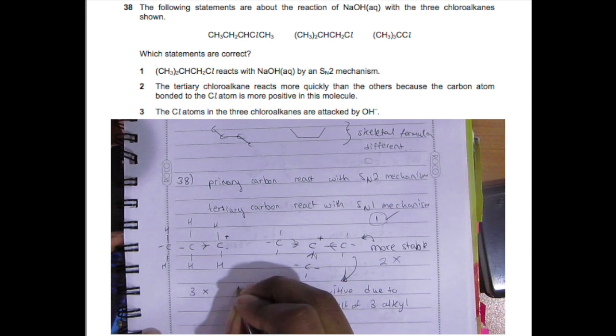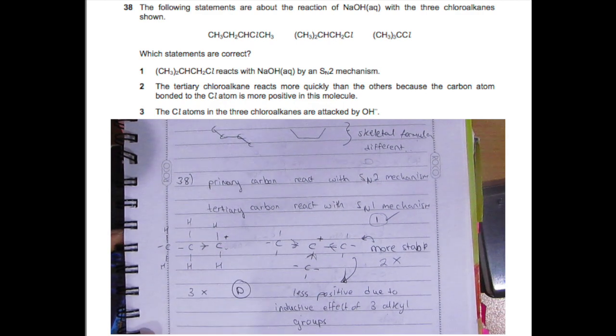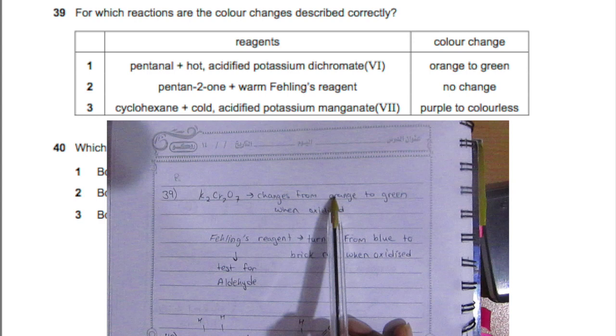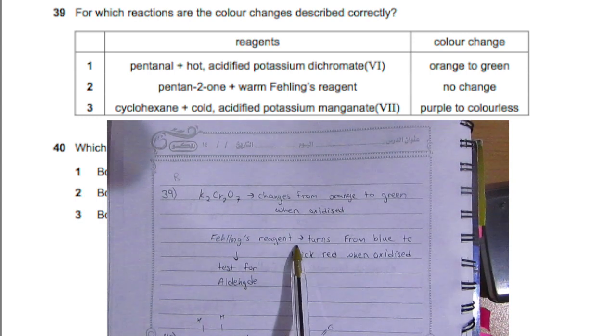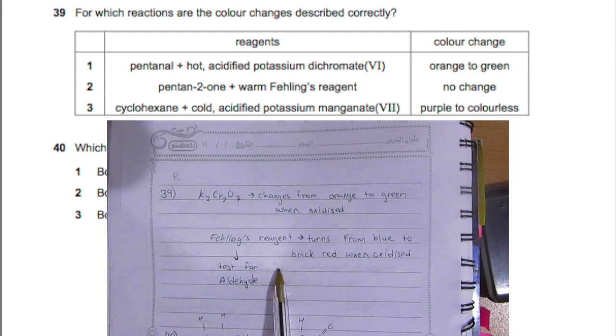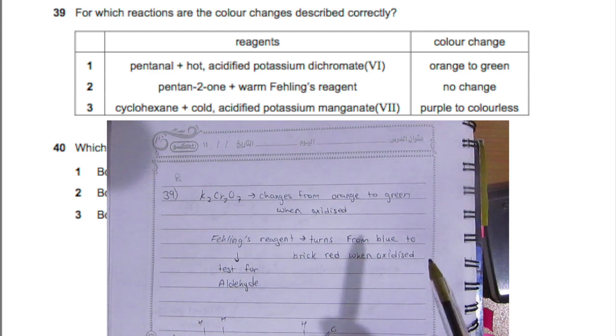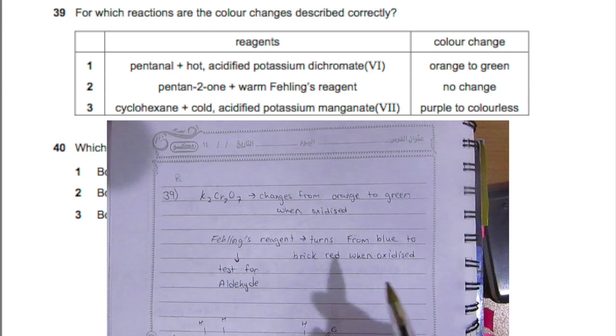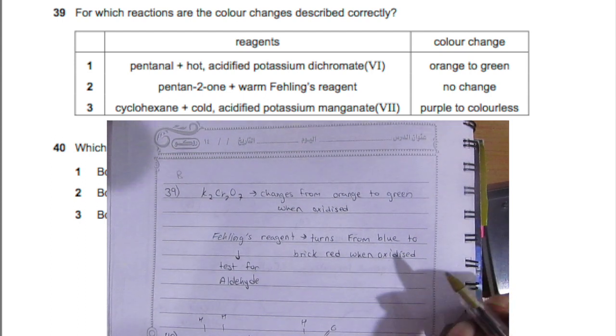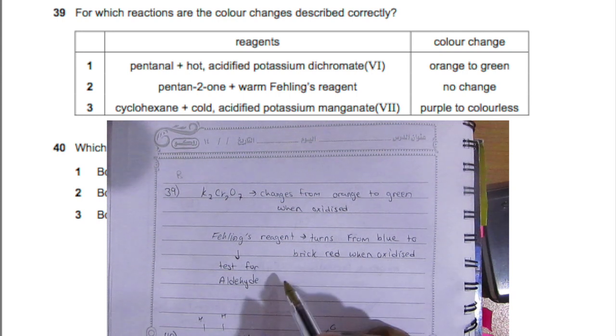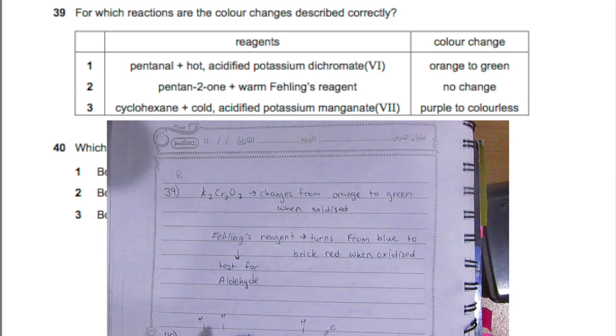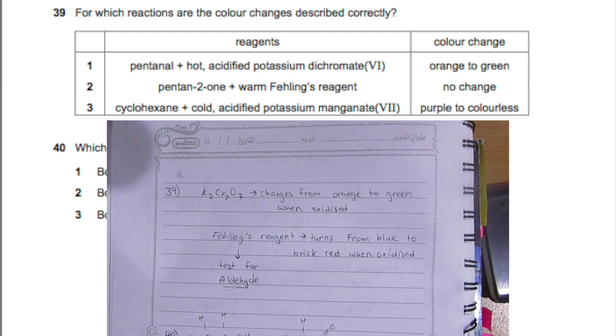Question 39: For which reactions are the color changes described correctly? Acidified potassium dichromate changes from orange to green when oxidized. Fehling's reagent turns from blue to red brick when oxidized—it's used to test for aldehydes. Pentanal plus hot acidified potassium dichromate, orange to green, is correct because pentanal is an aldehyde. When it gets oxidized, it turns into a carboxylic acid, so orange to green is correct.